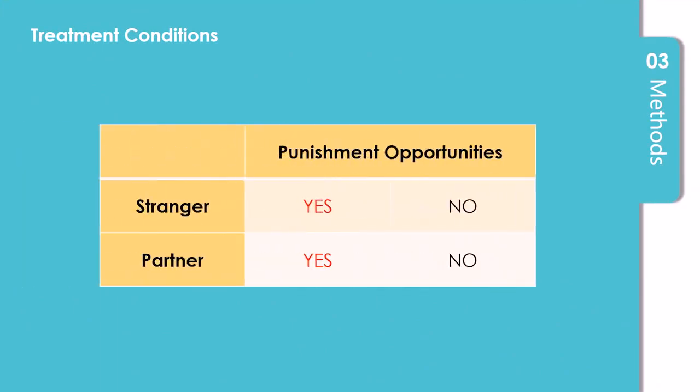There were four treatment conditions in this study. There is a stranger treatment with and without punishment opportunities, and a partner treatment with and without such opportunities. The probability of the partners being rematched with the same people in the next period was 100%.